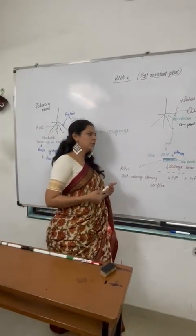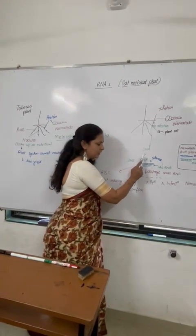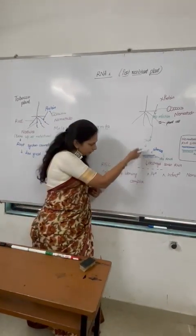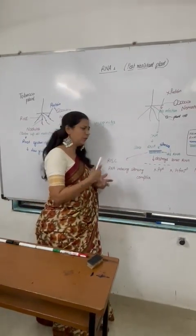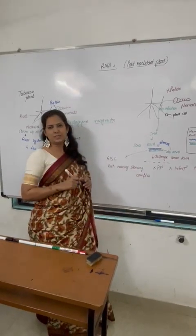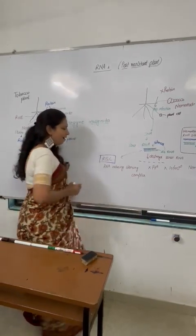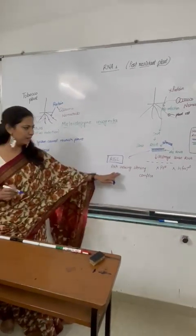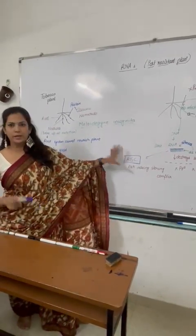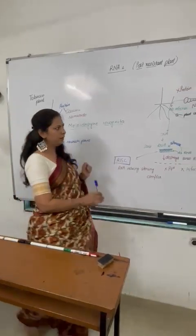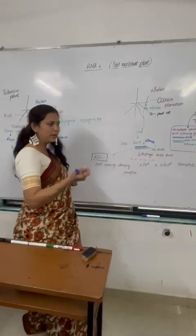Now there is a common confusion in students' minds: when double-stranded RNA forms a complex with the sense RNA, will a three-stranded structure be formed? No, this does not happen. Why not? Because there are more steps involved. The double-stranded RNA forms a structure called RISC — RNA-Induced Silencing Complex — but this is beyond the scope of your syllabus, so we will not go into it now. Just remember that Agrobacterium tumefaciens is a tumor-inducing vector.